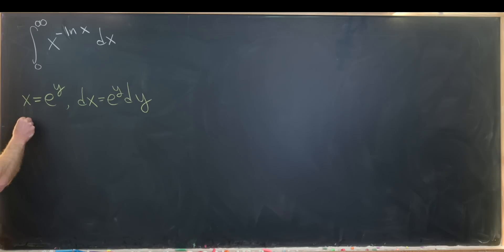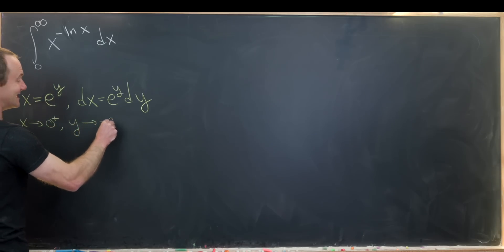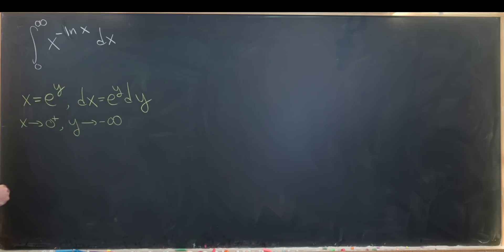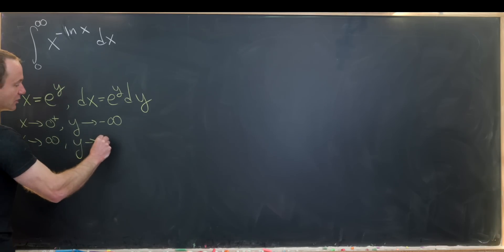Let's notice if x approaches zero from the right, which is what's happening right here, we have y approaching negative infinity. Then furthermore, if we have x approaching infinity, we also have y approaching infinity.